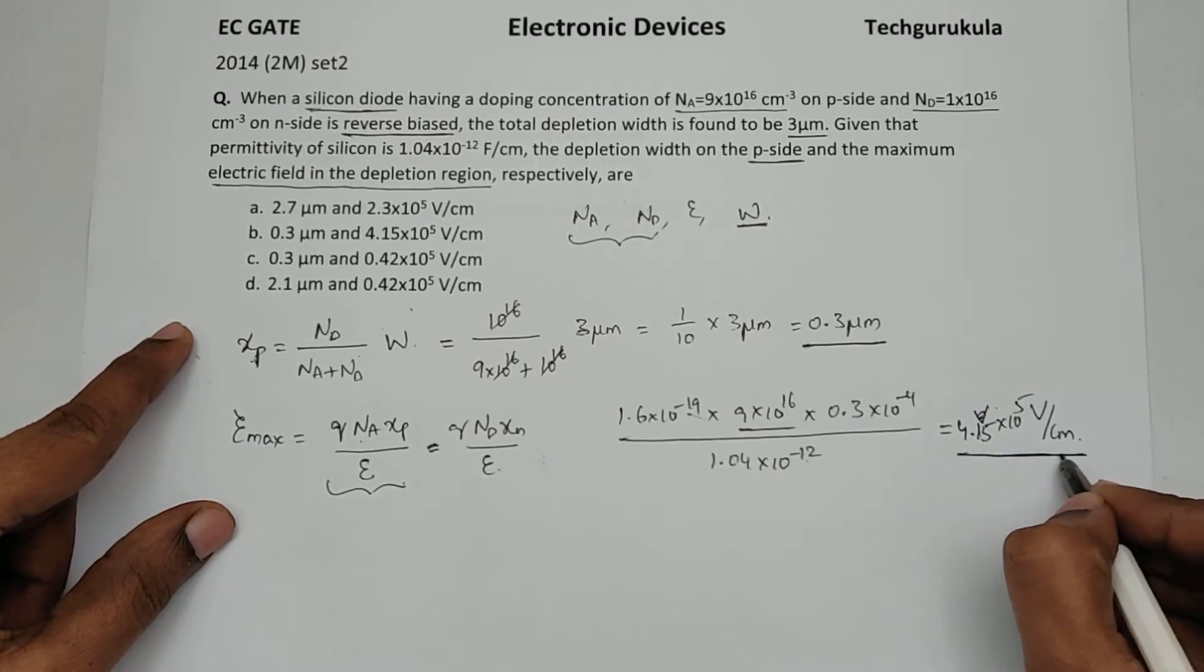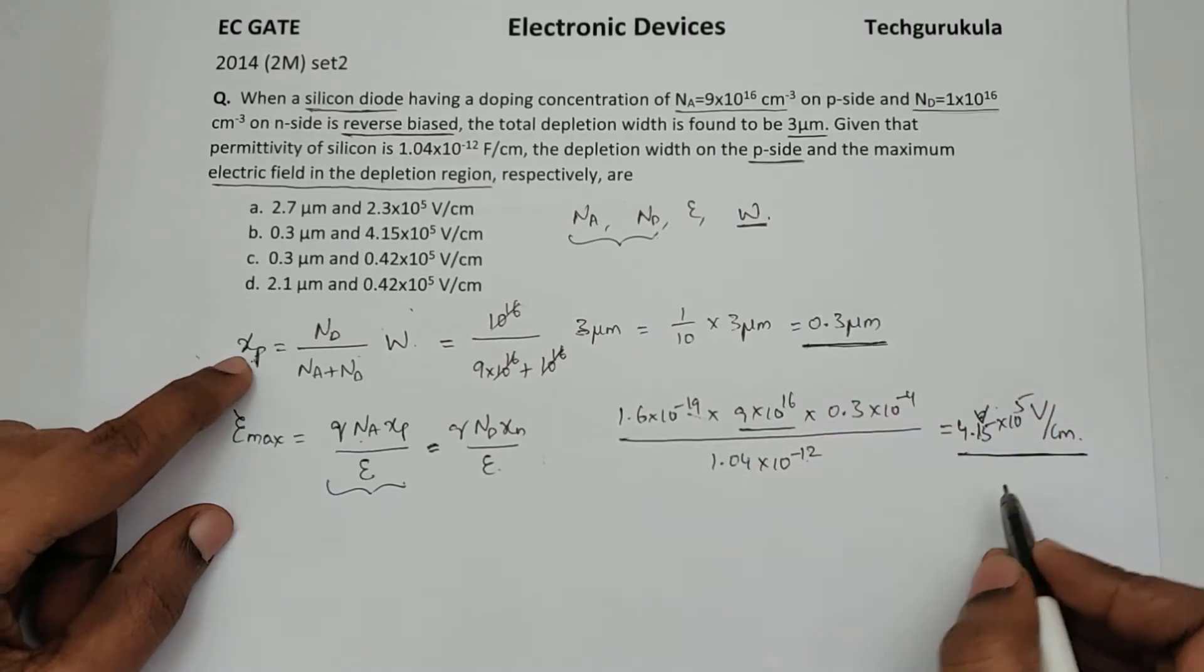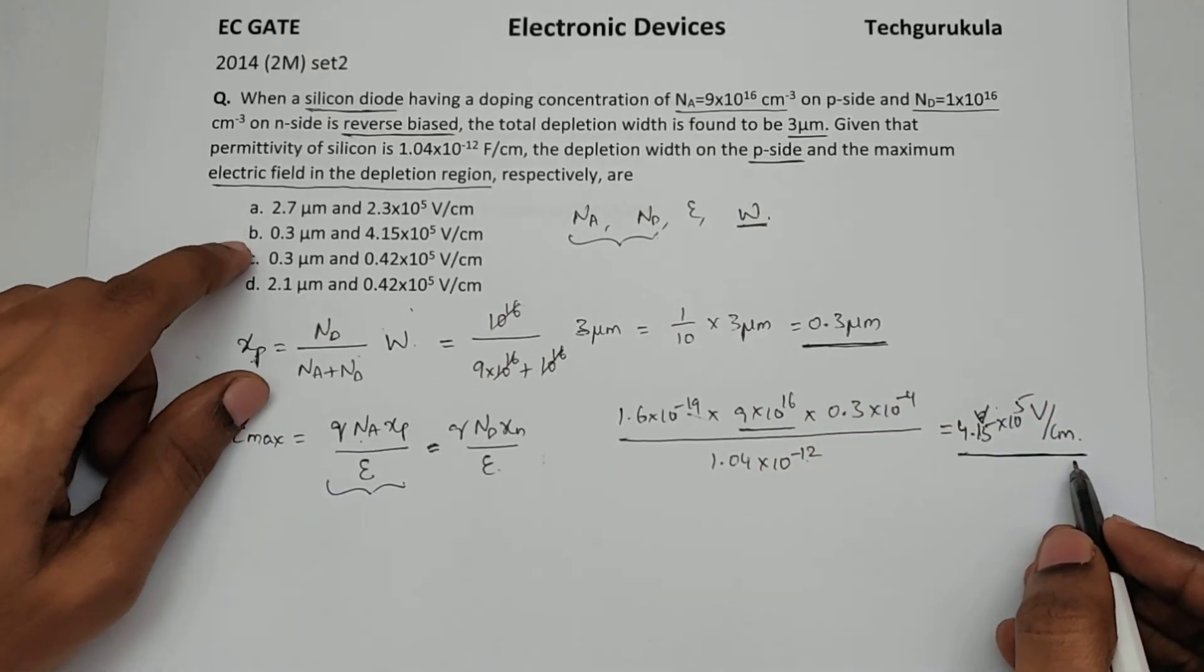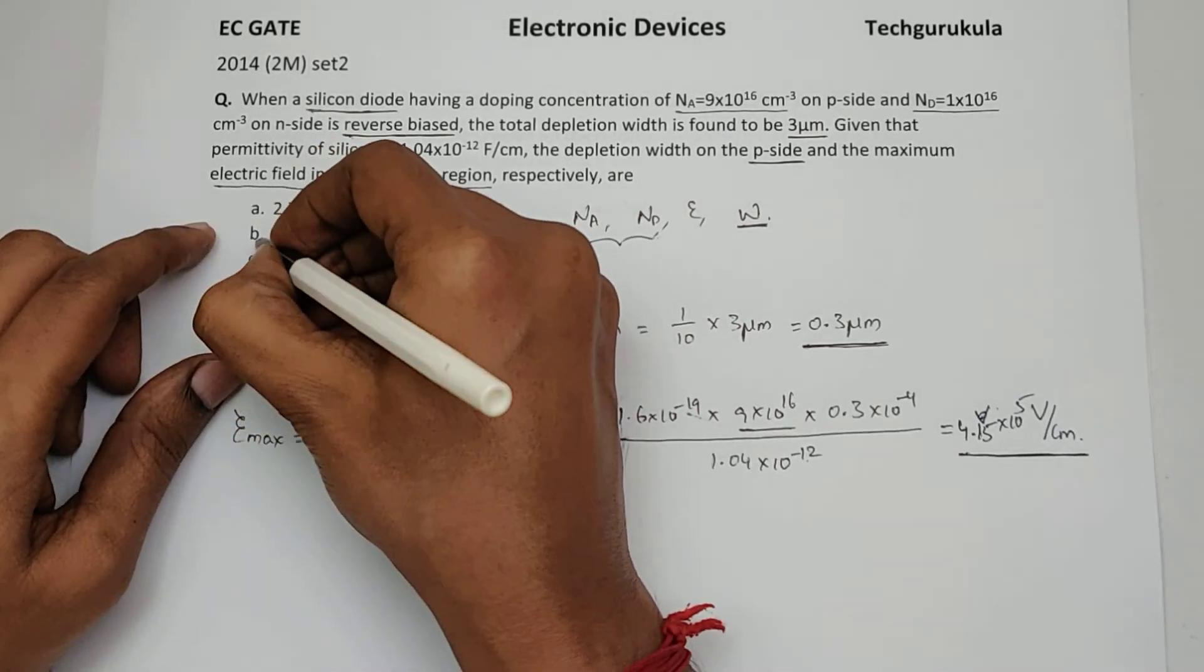And this electric field max will be right at the junction. So Xp is 0.3 and electric field max is 4.15 times 10 power 5 volt per centimeter. So that is option B.